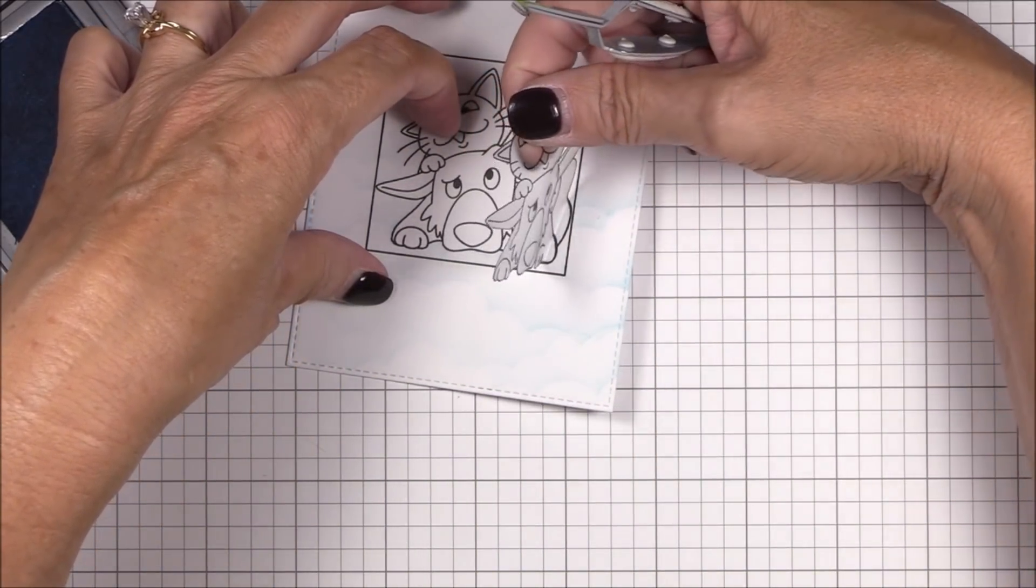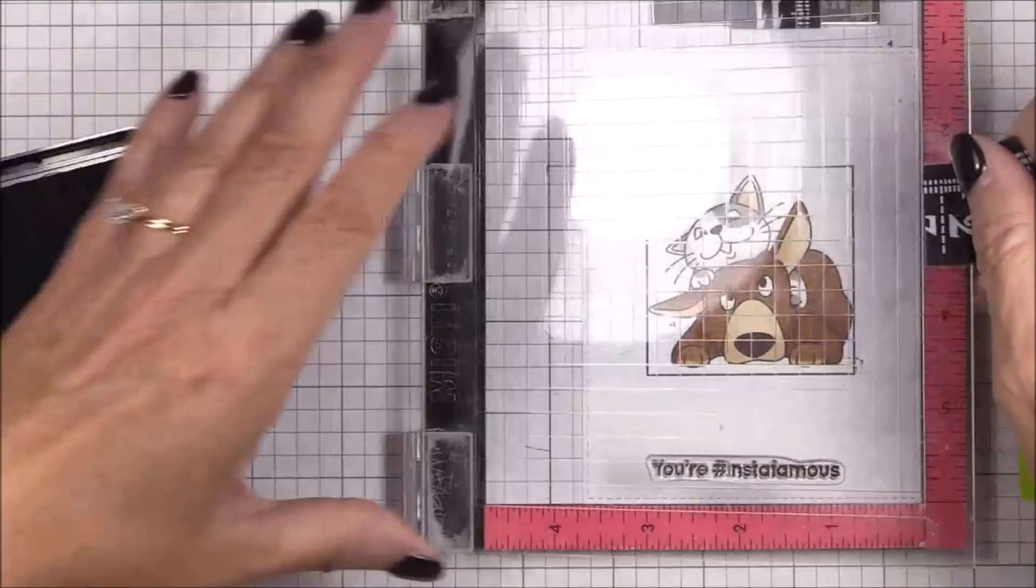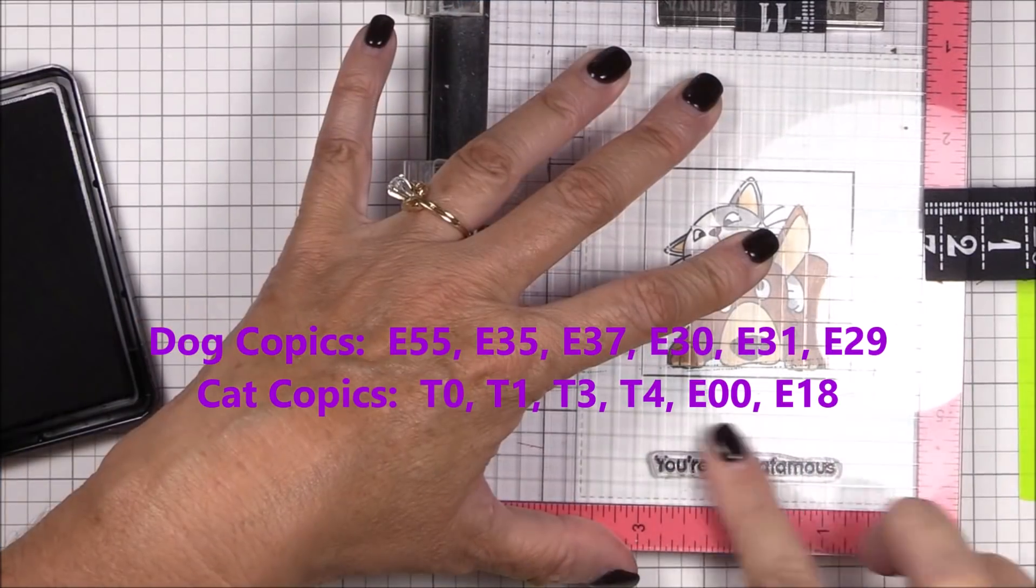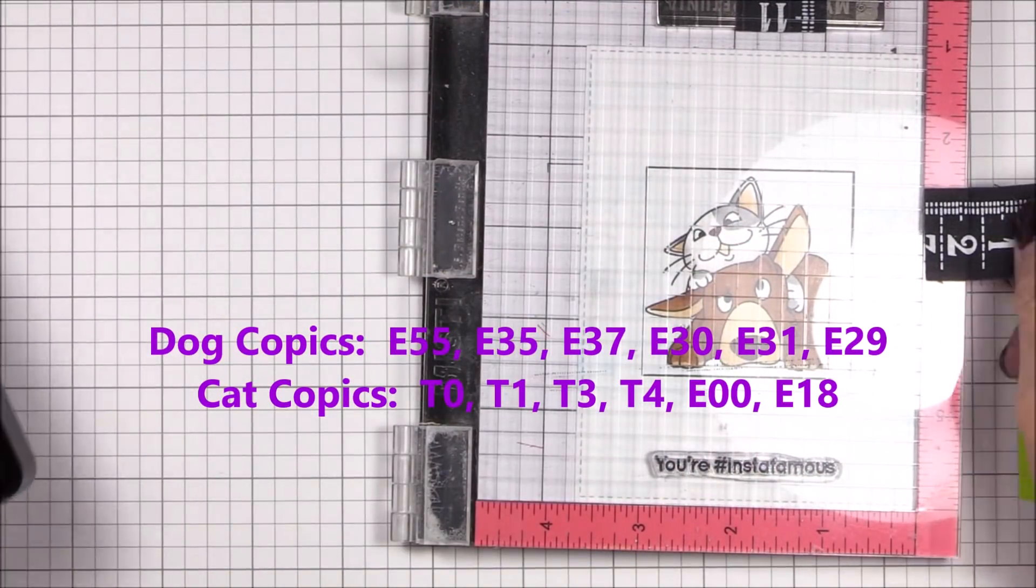I'm carefully removing that mask with my tweezers and I'll store it on top of the stamp set for future use. I colored the image with my Copic markers off camera so that I can focus on showing you the technique.